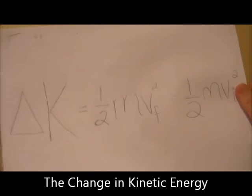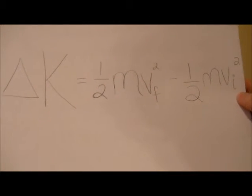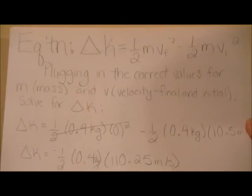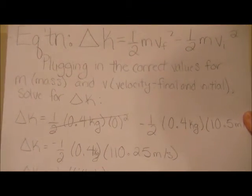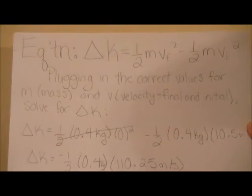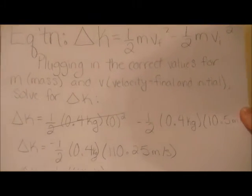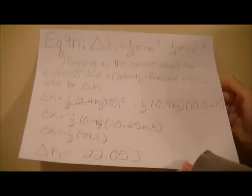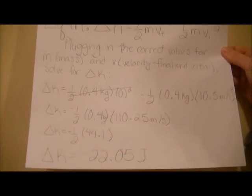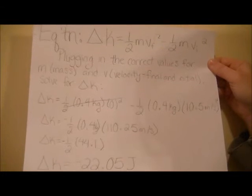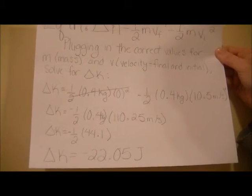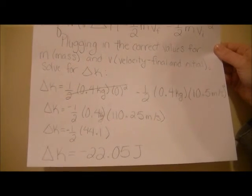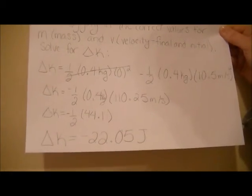Next, to solve for total kinetic energy, we use the kinematic equation: one-half mass times final velocity squared minus one-half mass times initial velocity squared. Plugging in the correct values for mass and velocity, final and initial, delta kinetic energy is equal to one-half times 0.4 kg times 0 squared, our final velocity, minus one-half times 0.4 kg times 10.5 meters per second squared, our initial velocity. We cross out the first value since it equals 0, winding up with negative one-half times 0.4 kg times 110.25 meters per second squared. Finally, we get a total kinetic energy equal to negative 22.05 joules.